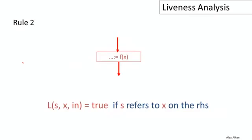Next, let's consider the effect of individual statements on the liveness of X. The first rule is: if we have a statement that reads the value of X — for example, an assignment statement whose right-hand side refers to X — then X is live before that statement. Clearly, X is just about to be used at the end of that statement, so X is live at that point. If a statement reads the value of X, then the liveness of X before that statement is true.